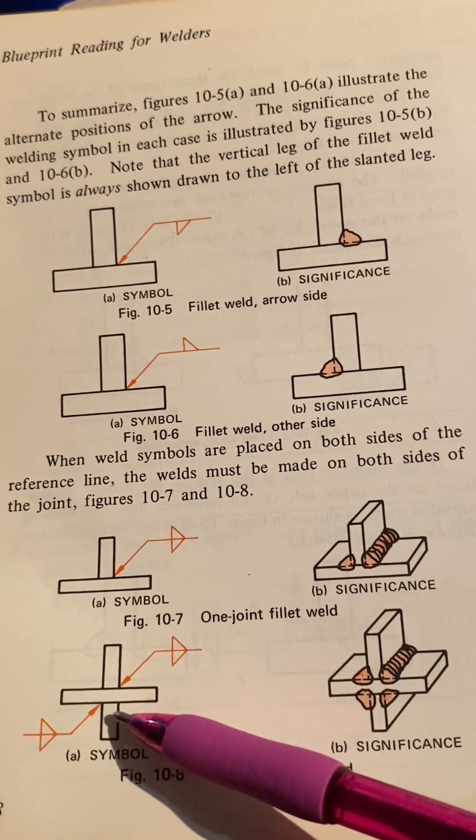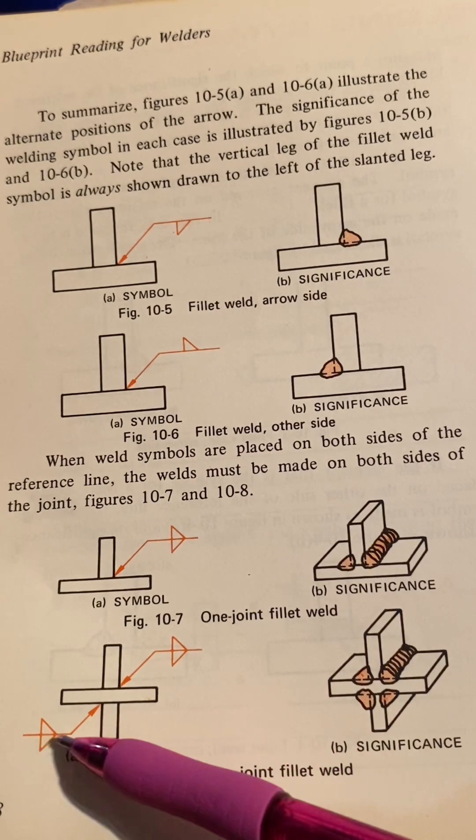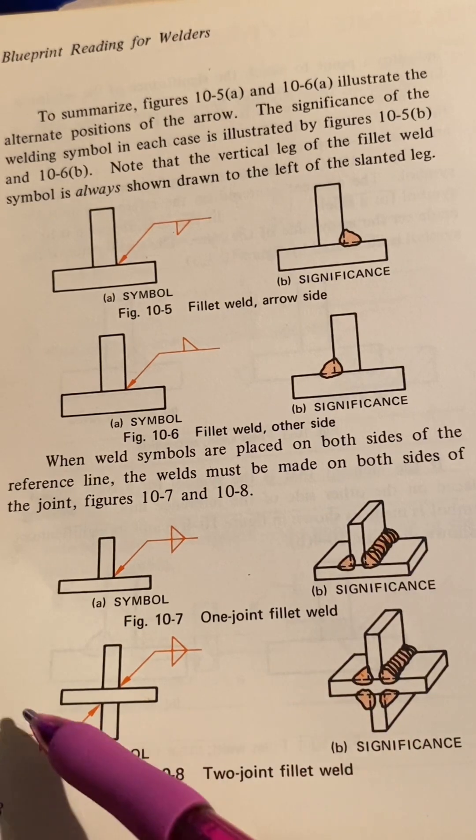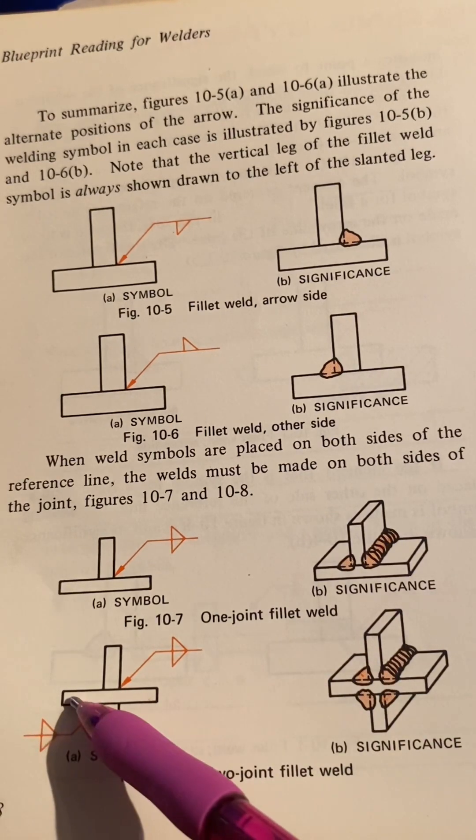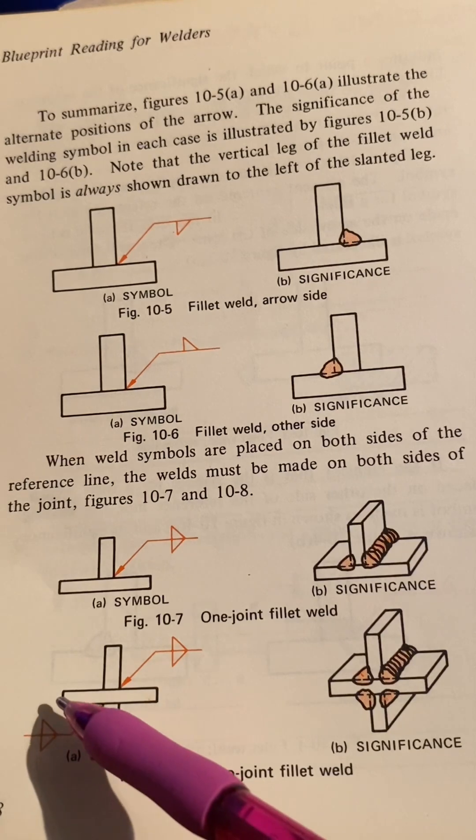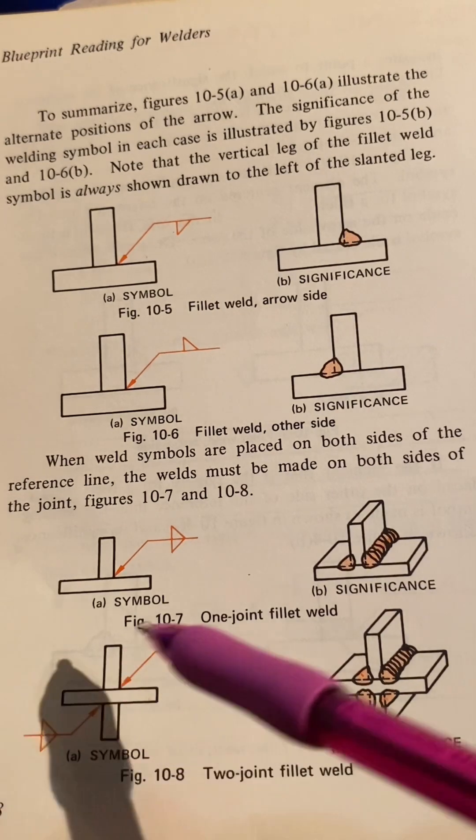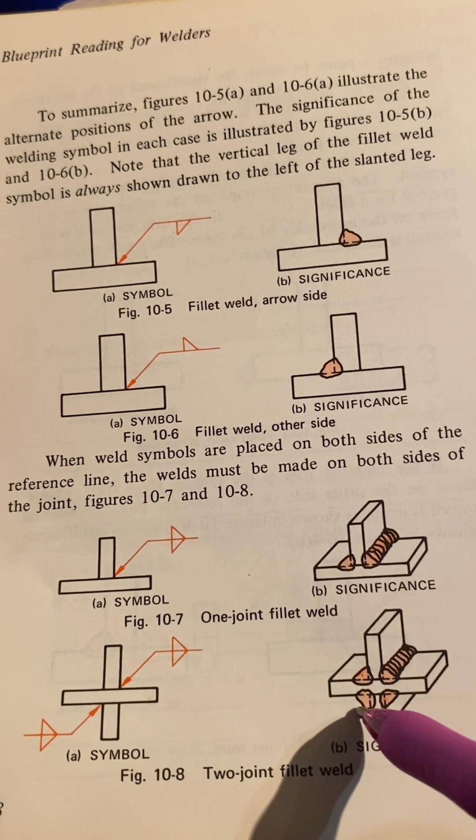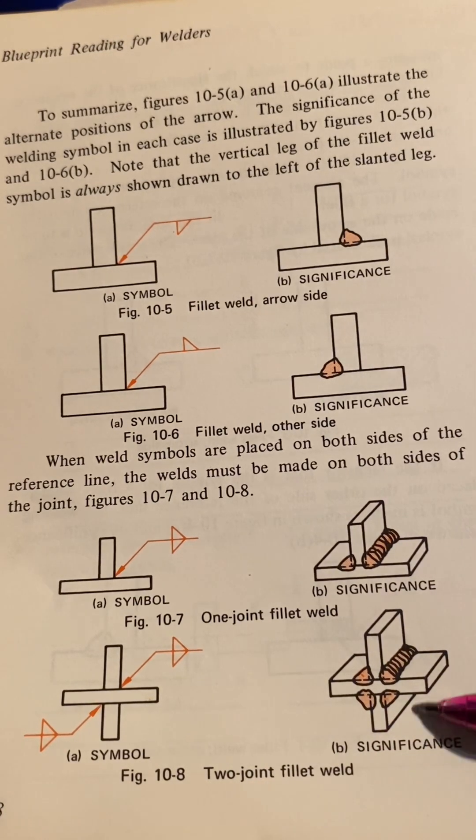And now the bottom, it tells you the exact same thing. In this instance, now, the arrow side is on this side, so it'd be this side. But it wants two fillet welds, one on the arrow side which is always under the arrow, and one on the other side which is on top of the arrow. So you have one on the arrow side and one on the other side.